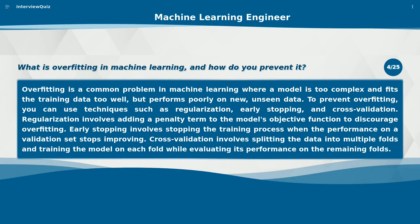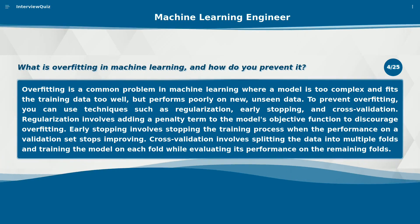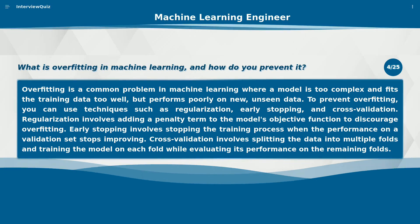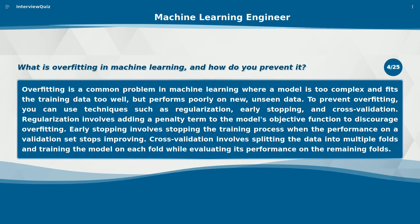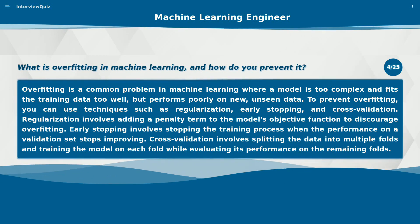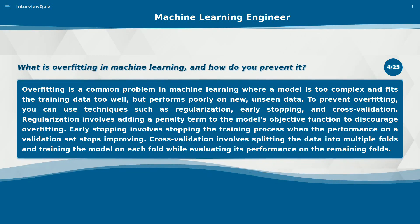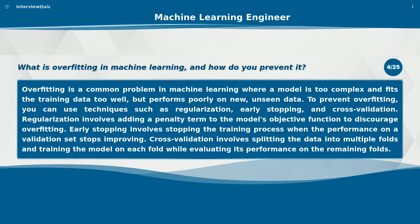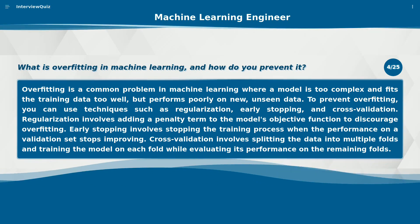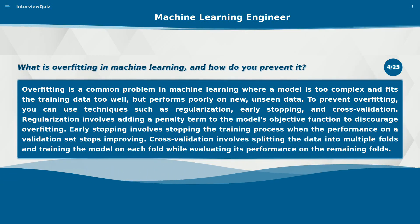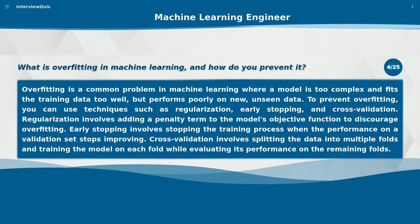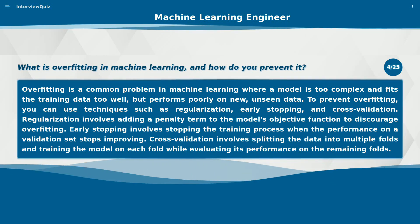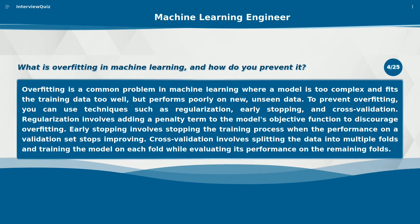Regularization involves adding a penalty term to the model's objective function to discourage overfitting. Early stopping involves stopping the training process when the performance on a validation set stops improving. Cross-validation involves splitting the data into multiple folds and training the model on each fold while evaluating its performance on the remaining folds.